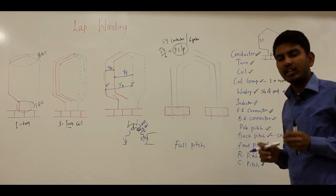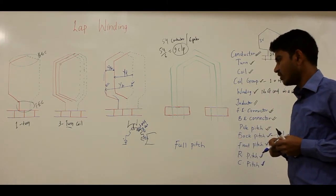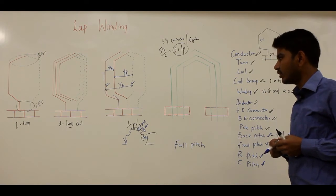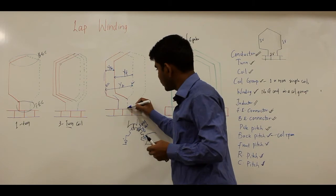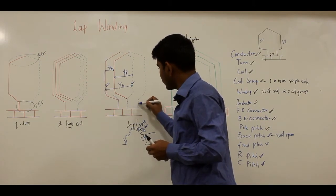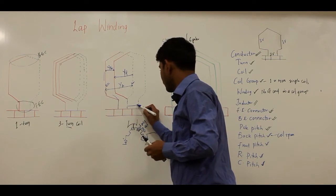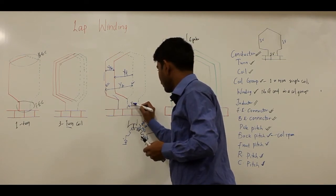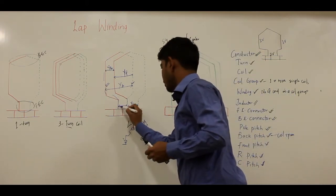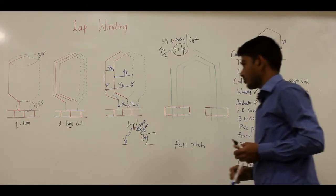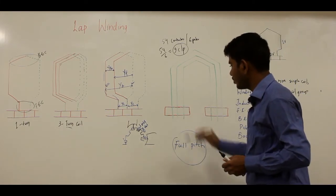Commutator pitch (YC) is the distance in terms of commutator segments. It is the distance between the two end connections of a coil to the commutator segments. This distance in terms of commutator segments is your commutator pitch YC.